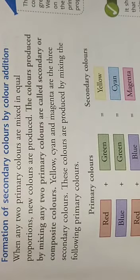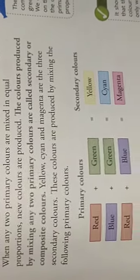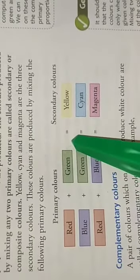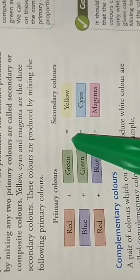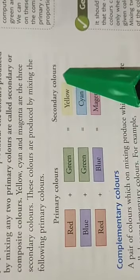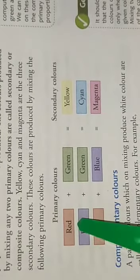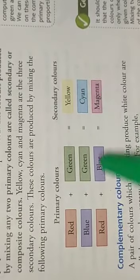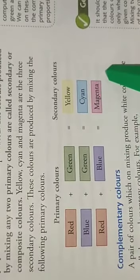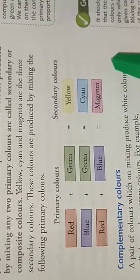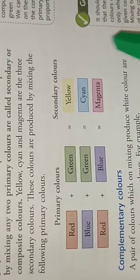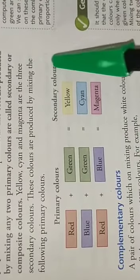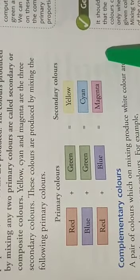For example, when two primary colors are mixed — suppose red and green — they form yellow. Blue plus green gives you cyan. And red plus blue gives you magenta. So yellow, cyan, and magenta are the three secondary colors.